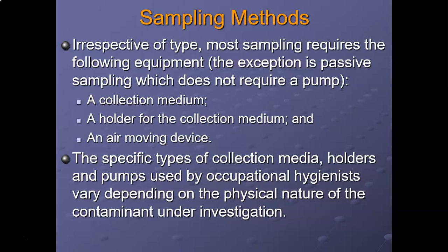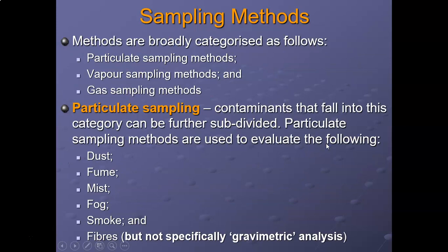Methods are broadly categorized as follows: particulate sampling methods, vapor sampling methods, and gas sampling methods. Particulate sampling contaminants can be further subdivided. Particulate sampling methods are used to evaluate dust, fumes, mist, fog, smoke, and fibers — but not specifically gravimetric analysis.